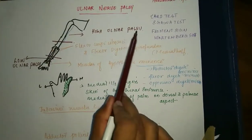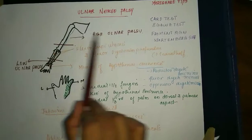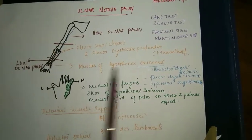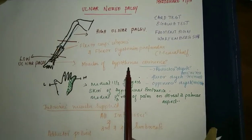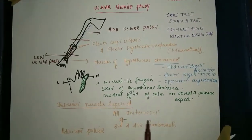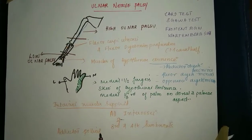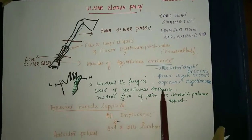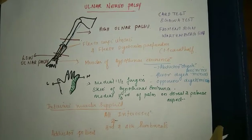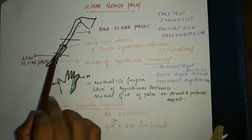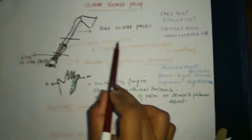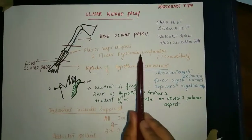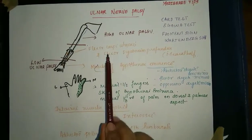When there is high ulnar palsy, the nerve supply to flexor carpi ulnaris and flexor digitorum profundus will be lost, as will the nerve supply to the muscles of the hypothenar eminence and the intrinsic muscles like interossei, lumbricals, and adductor pollicis. The sensory supply of the medial 1.5 fingers and skin of the hypothenar eminence is also lost. In low ulnar nerve palsy, the nerve supply to flexor carpi ulnaris and flexor digitorum profundus will be preserved; all other muscles are affected and the cutaneous supply is affected.